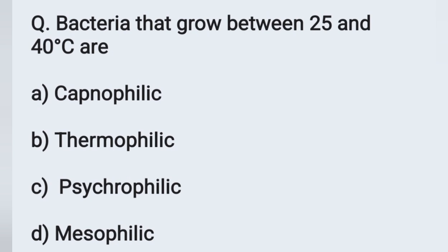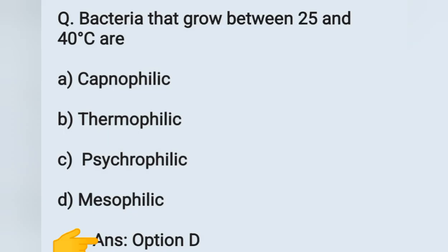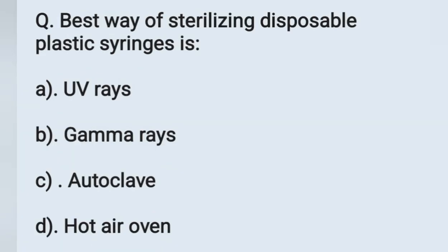The next question: Bacteria that grow between 25 and 40 degrees Celsius are — option A: capnophilic, option B: thermophilic, option C: psychrophilic, option D: mesophilic. Bacteria growing between 20°C to 50°C are mesophilic; between 55°C to 80°C are thermophilic; below 20°C are psychrophilic. So bacteria growing between 25°C to 45°C are mesophilic. Option D is the correct answer.